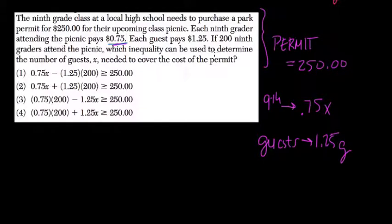So if 200 9th graders attend, which inequality can be used to determine the number of guests needed to cover the cost of the permit? So they use, instead of G for guest, they use X. So it's 1.25 times X.